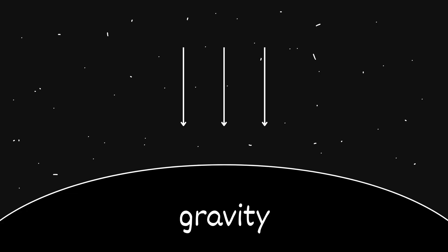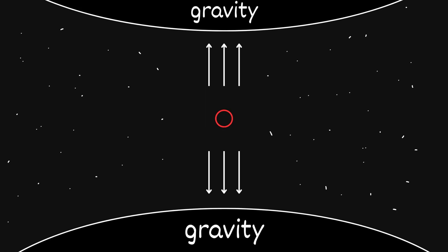Gravity never stops pulling. But there are places where two big pulls balance each other out. Space doesn't push or pull too much. It just holds you there. These are called Lagrange points.